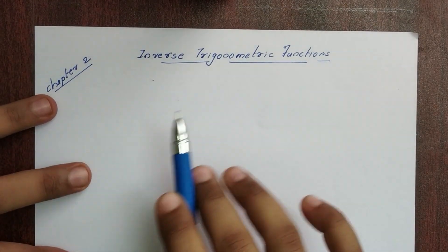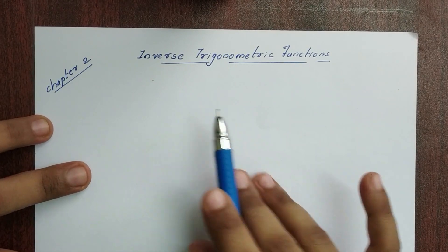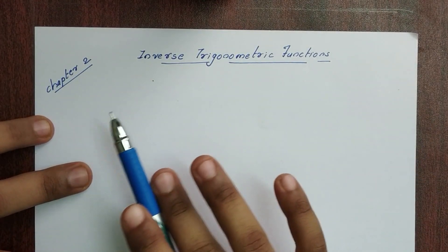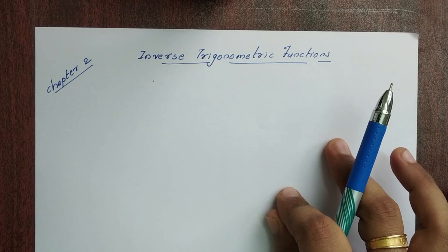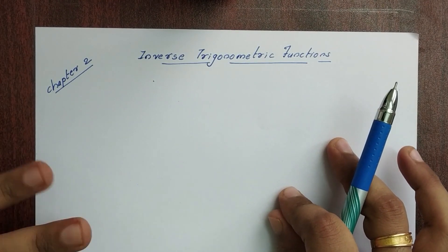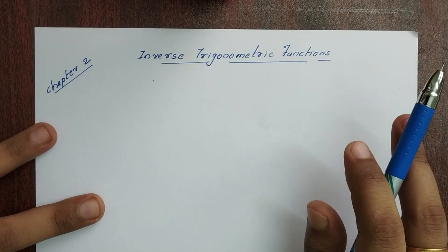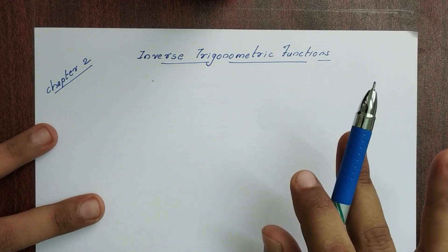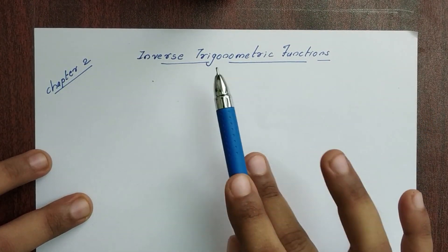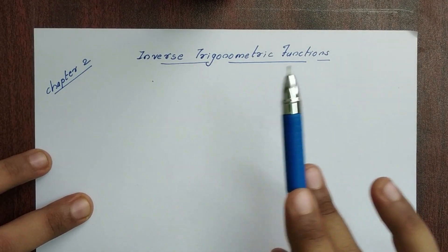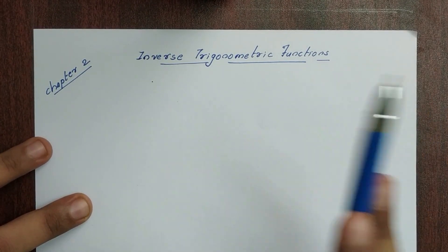Hi! In the Plus One Mathematics, in the Inverse Trigonometric Functions, I will go to chapter 2. What are Inverse Trigonometric Functions? These three words are: inverse, and trigonometric functions. If you don't know the inverse, you can learn the inverse exists, and you can learn the Plus One trigonometric functions in every chapter.